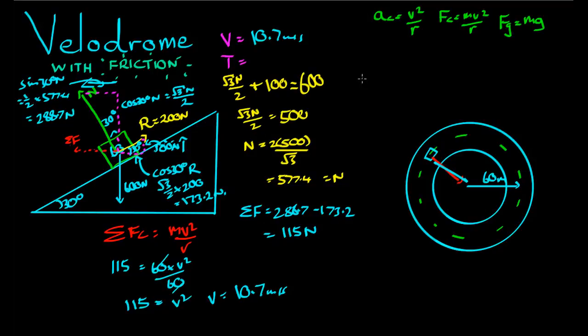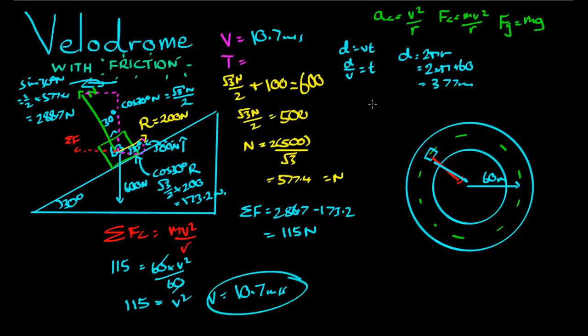We also promised to find the period. Well, the time distance is equal to velocity, or speed times time. So time is equal to distance over velocity. The total distance around this circle is 2 pi r. So that's 2 times pi times 60. That's 120 times pi, which is 377 meters. And the speed he's travelling at is 10.7. So the time taken is 377 divided by 10.7, which comes to around about 35.2 seconds.